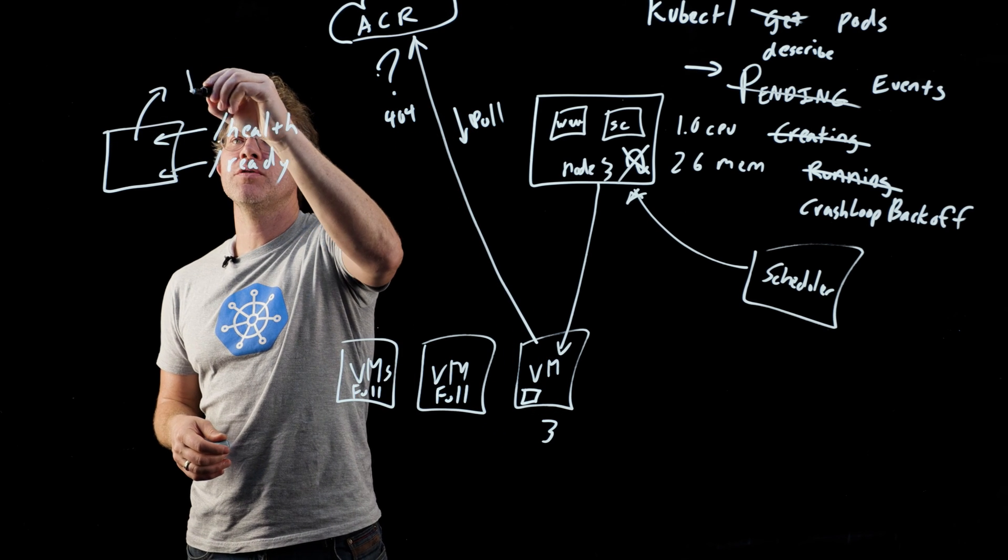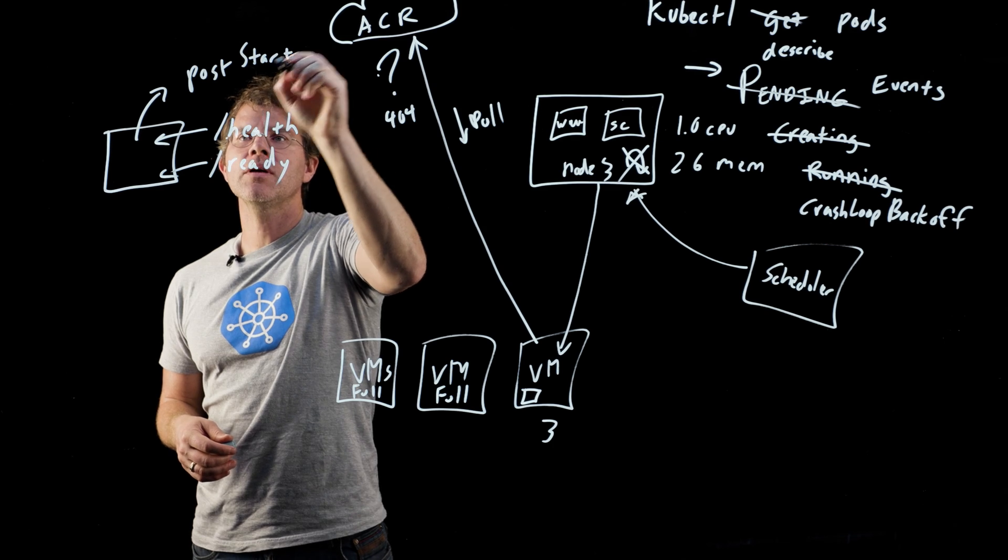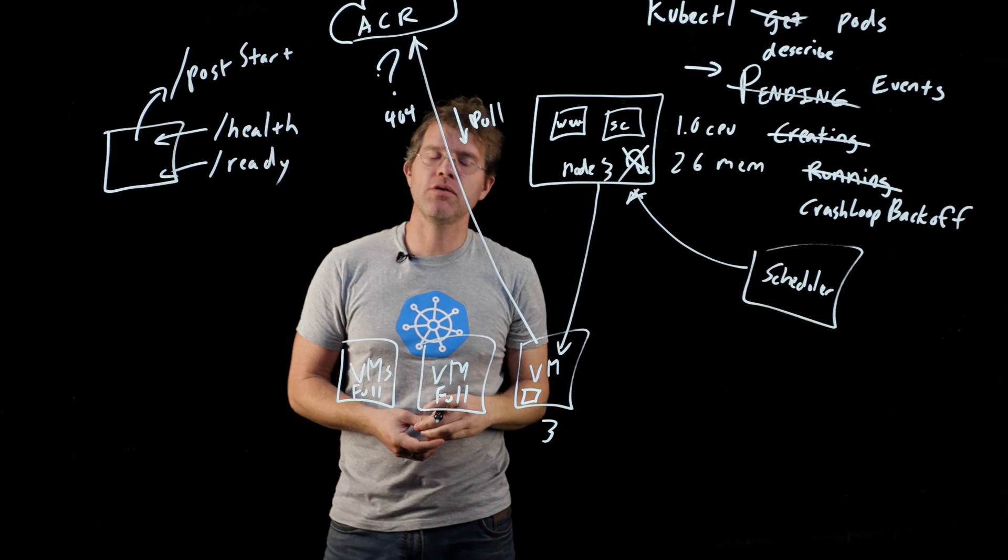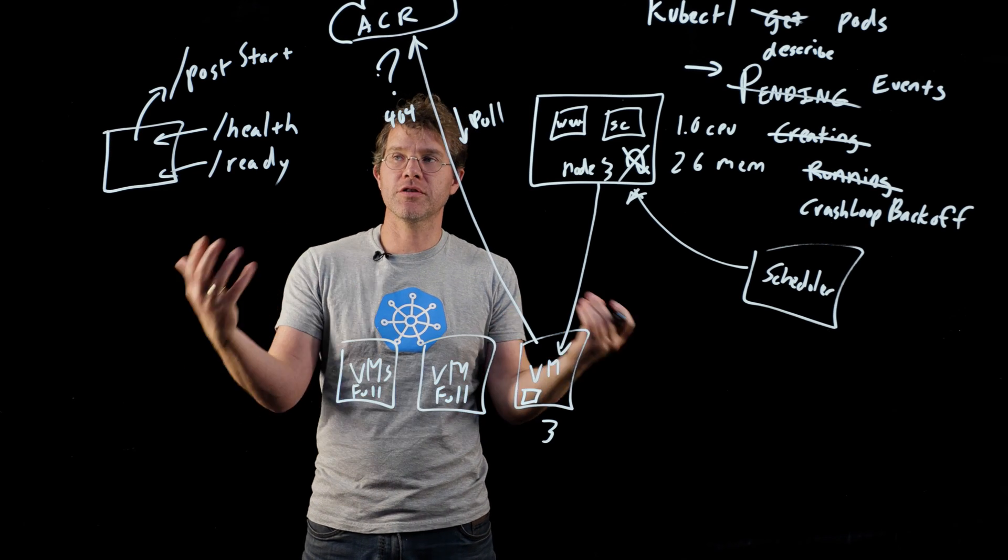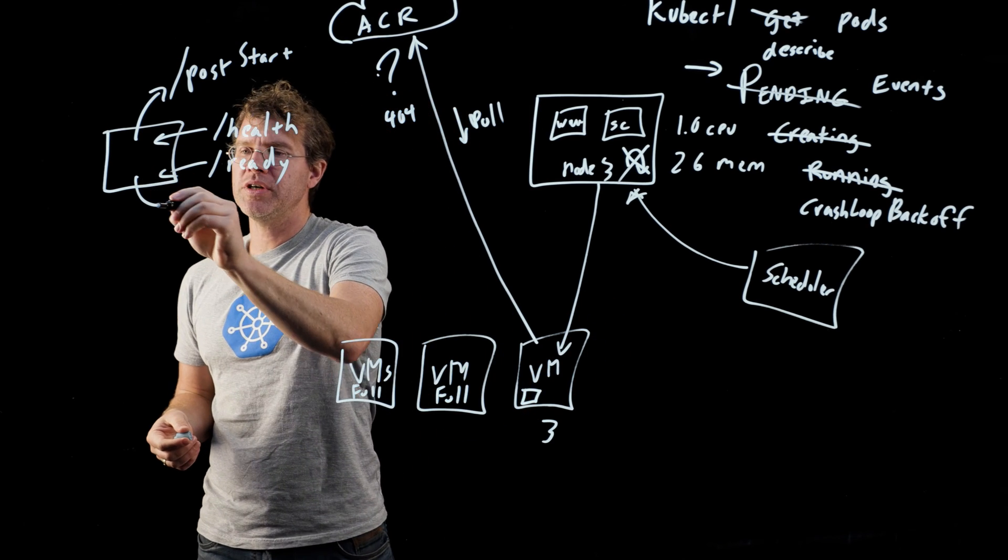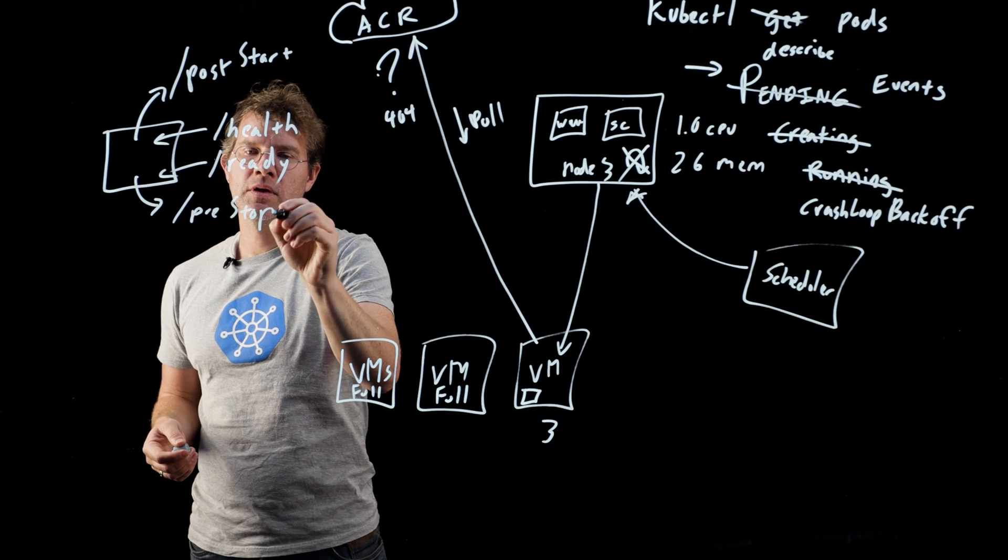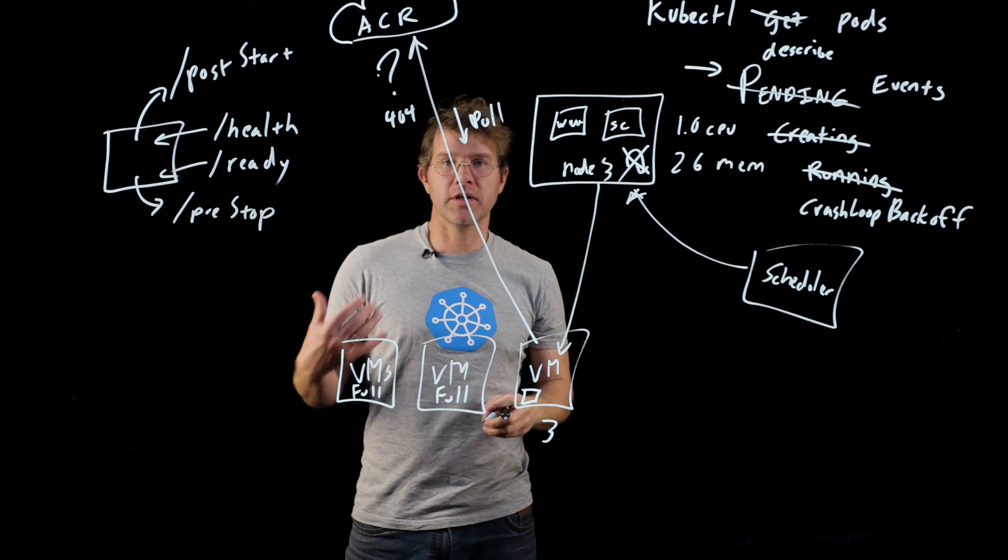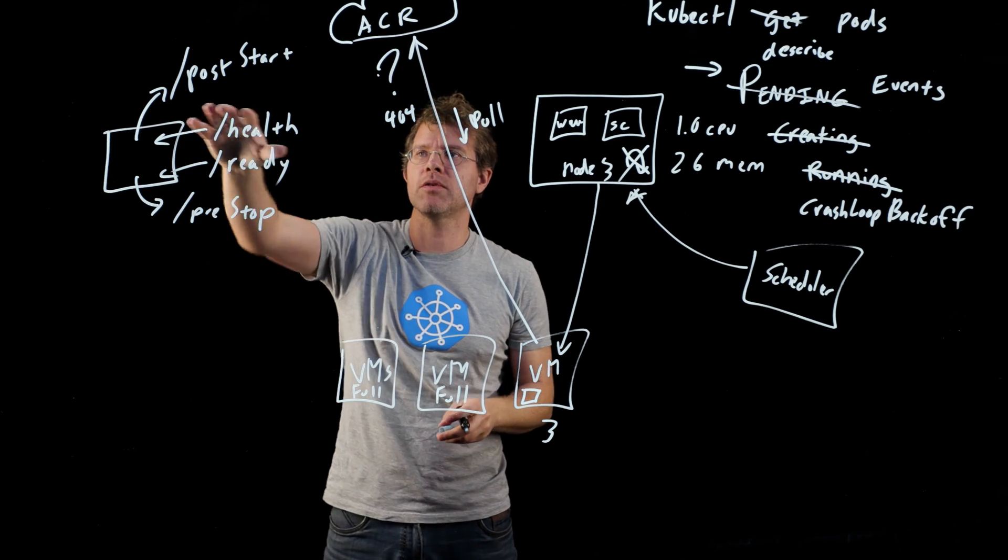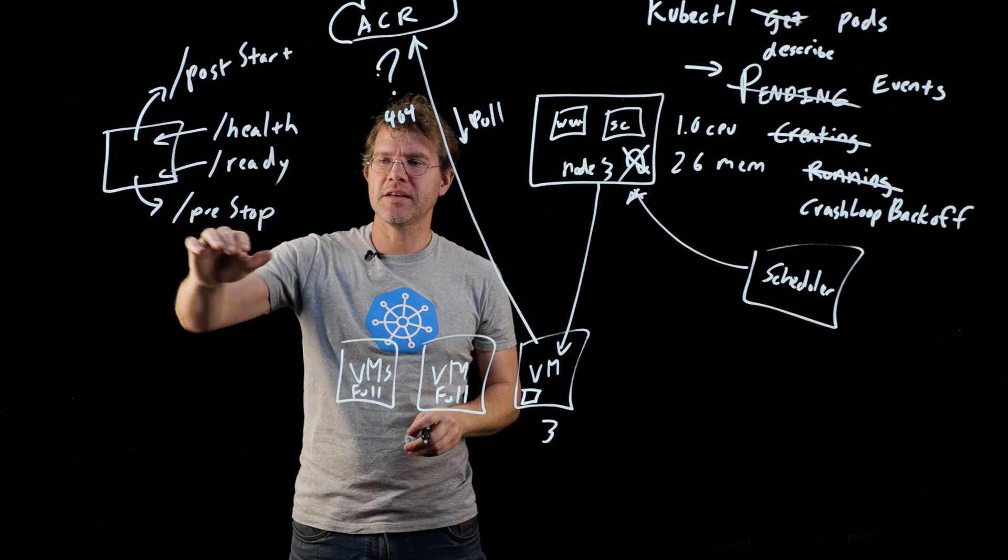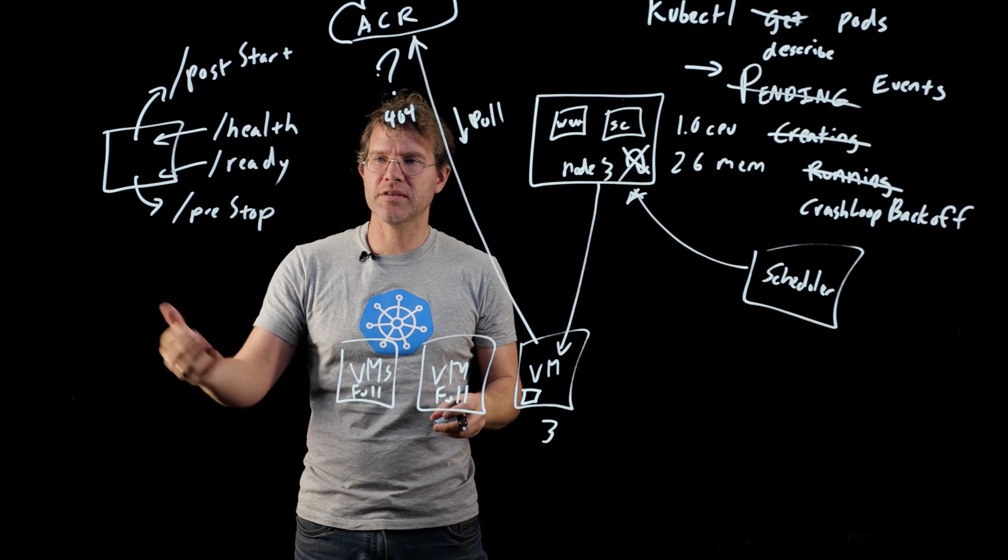And the first one is post start, which is called, that's a webhook that you can register. And that webhook is called immediately after your container starts. And then there is pre-stop, which is called immediately before your container terminates. So if you want to take some action after you've started running, you can register a post start hook. If you want to take some action just before your container is terminated, you can register a pre-stop hook.